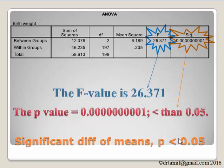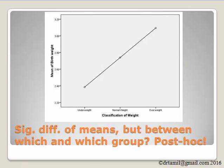Looking at the ANOVA result, the F-value is 26.371 and the p-value is approximately 0.0000000001, which is less than 0.05. Therefore, there is a significant difference in the mean birth weight of babies between the three groups of mothers. Since we have a significant difference of means, the question is: between which groups? Is it between underweight and normal weight, normal weight and overweight, or underweight and overweight? For that, we have to do the post-hoc test.